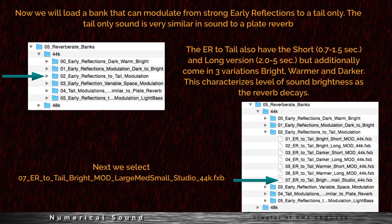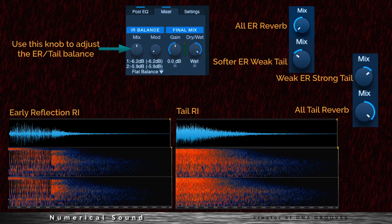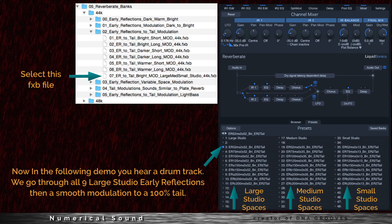Now we will load a bank that can modulate from strong early reflections to tail only. The tail only sound is very similar to the sound of a plate reverb. The early reflection to tail also has short and long versions, but also comes in three variations: bright, warm, and darker, which characterizes the level of sound brightness as the reverb decays. First go into the O2 early reflections to tail modulation folder, then go down to the lowest one starting with 07, which are the studio spaces. In the following demo you hear a drum track going through all nine studio early reflections, then a smooth modulation to 100% tail. The first column has all large studio spaces, the second column medium studio spaces, and the third one small studio spaces.